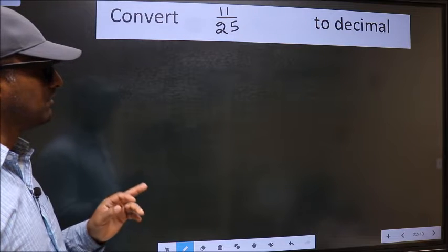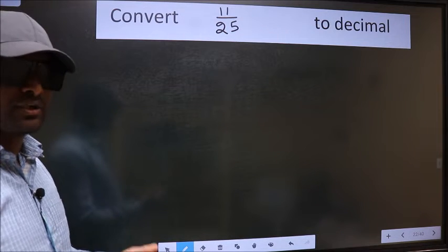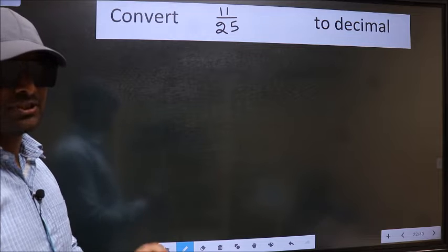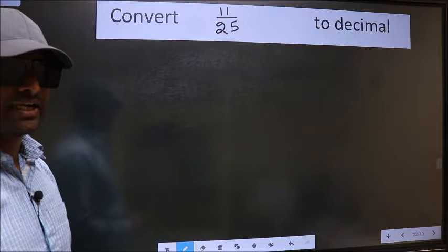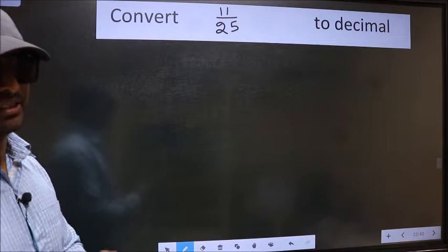Convert 11 by 25 to decimal. To convert to decimal, we should divide it, and to divide it, we should frame it in this way.